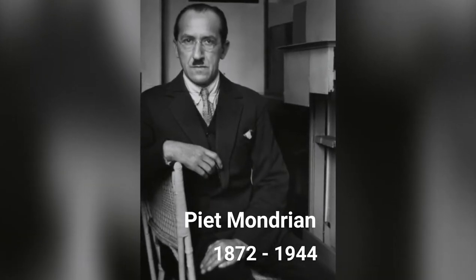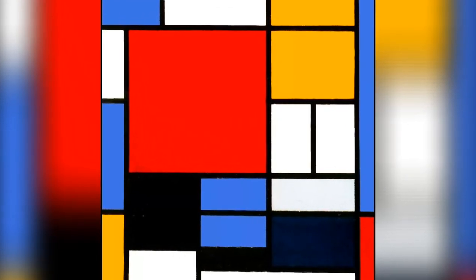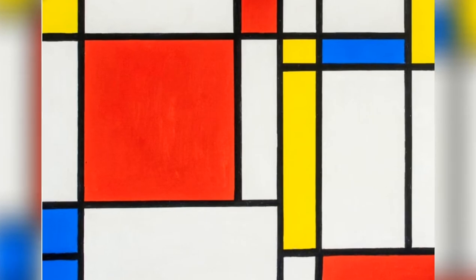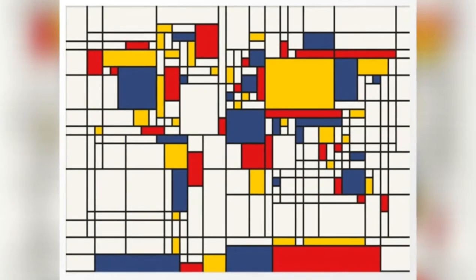Pierre Mondrian was born in the Netherlands in 1872. His masterpieces were painted by using grid boxes of three primary colors: red, blue and yellow, with black lines to define the borders of the grid boxes.